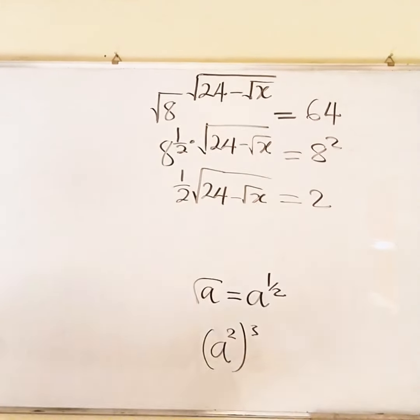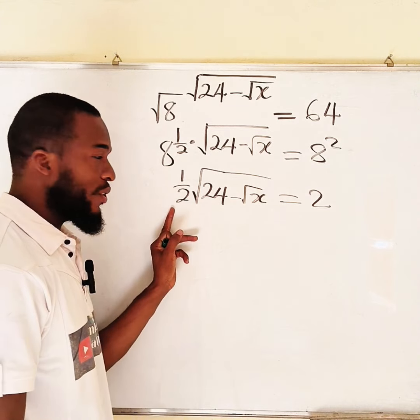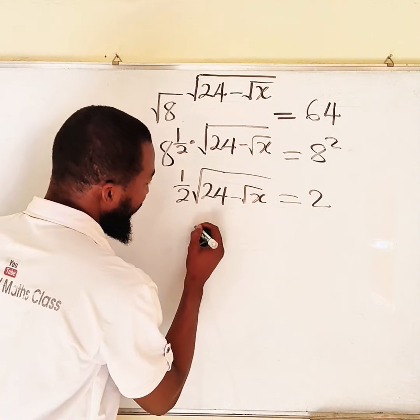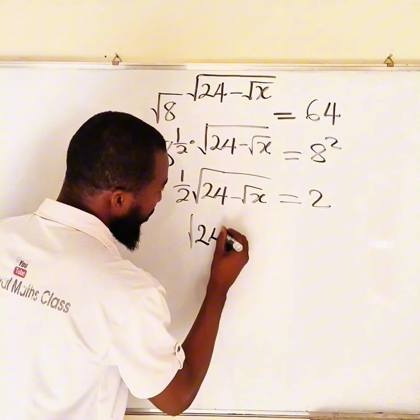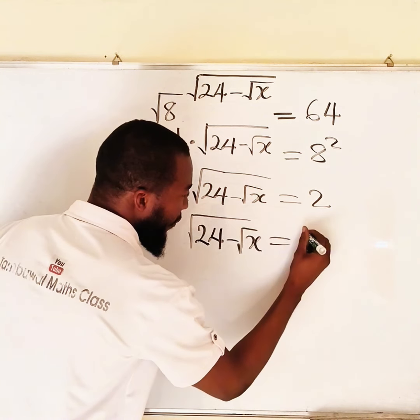Then we can multiply both sides by 2, just to clear this fraction of 1 over 2. If you do that, you have square root of 24 minus square root of x equals 4.